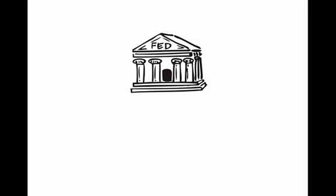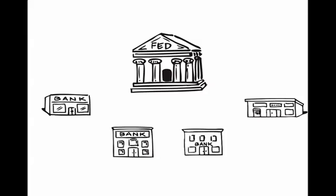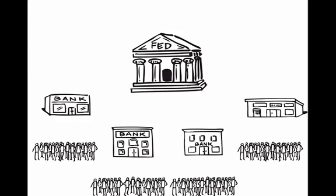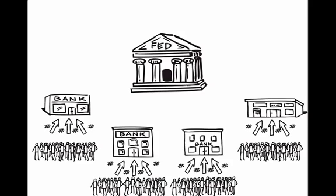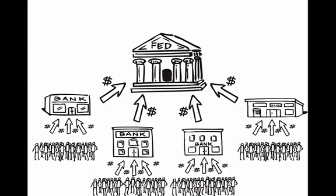To do this, I'm going to use an example. So let's start by presenting the players. We have the Fed, the banks, and the people. The way the system works is that people deposit money in banks, and banks deposit a percentage of that money, known as the reserve requirement, at the Fed.